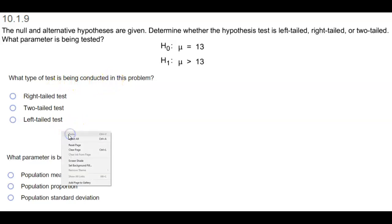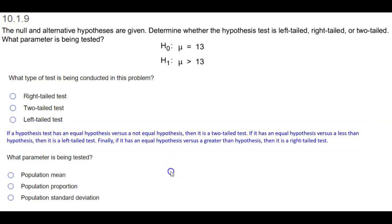Before we answer this question, let's recall some information here. If a hypothesis test has an equal hypothesis versus a not equal hypothesis, then it is a two-tailed test.